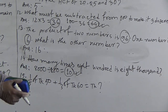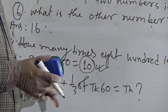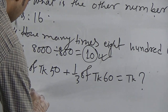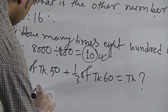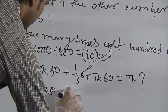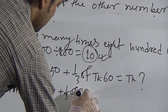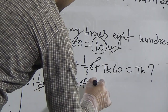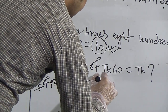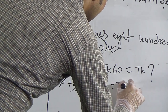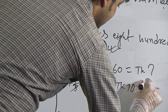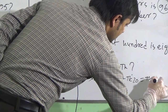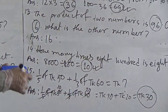Question 15, our last question: One-fifth of taka 50 plus one-third of taka 60 is equal to how much? We divide 50 by 5, which gives 10. We divide 60 by 3, which gives 20. So taka 10 plus taka 20 equals taka 30. This is our answer for the last question: taka 30.